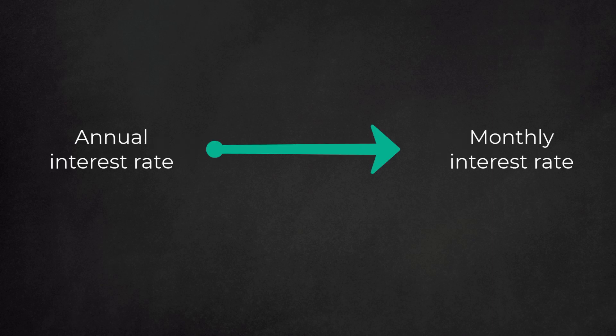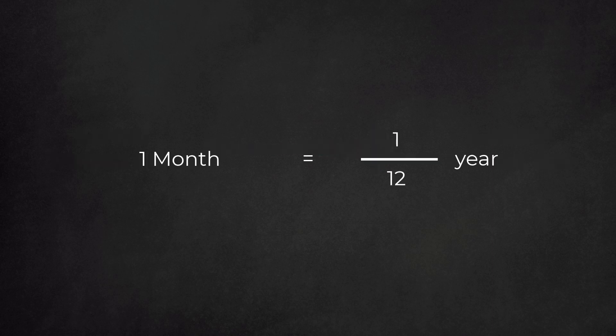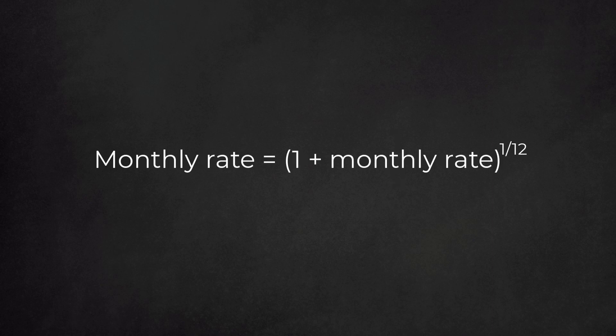The other way around is easy. Now we start with the annual rate and like to find the monthly rate. A month is 1 twelfth of a year. So, this time we need to raise to the power of 1 divided by 12.